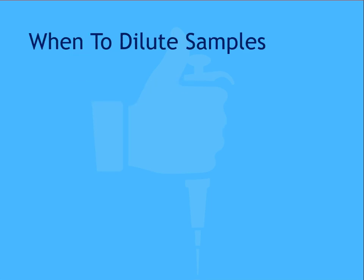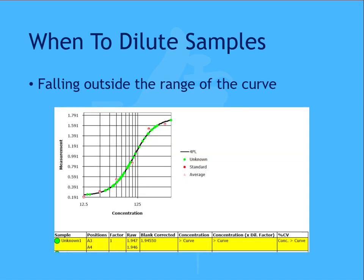Samples are often diluted for two main reasons. If the result of the unknown falls outside the range of the curve, the concentration result will be incalculable and will return a flagged result, or in this case, greater than curve limit. Note, this is a direct ELISA. If you're working with a competitive ELISA and the direction of the curve is switched, samples too concentrated may return a less-than-curve designation.